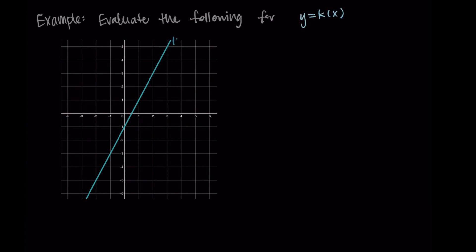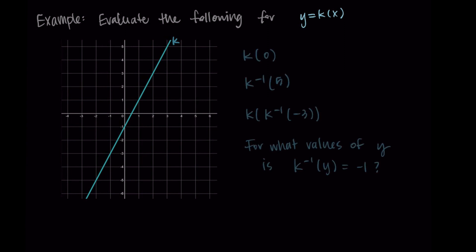Let's take the line and answer questions using inverses, calling the function k. We evaluate: k(0), k inverse of 5, k of k inverse of −3, and for what values of y is k inverse(y) = −1. For k(0): 0 is an x value, the corresponding y is negative 1, so k(0) = −1. For k inverse of 5: 5 is a y value, and x = 3 gives y = 5, so k inverse(5) = 3.